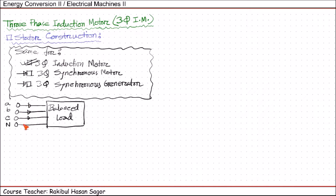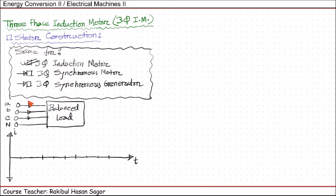These currents are sinusoidal in nature. Let us draw the approximate wave shape of these three currents passing through this balanced load. The x-axis represents the time direction and the y-axis is the amplitude of the current. Let us name the current passing through phase A as IAA'. This current will have a sinusoidal shape in nature. This line represents the positive peak and negative peak of the wave shape, so we can name it IM — that means current maximum — and minus IM.